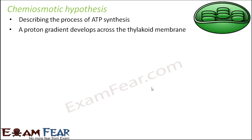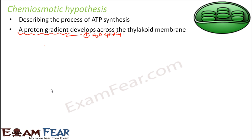A proton gradient develops across the thylakoid membrane. This gradient is developed by two factors. The first is the water splitting reaction. During water splitting, a lot of protons are produced and those protons get accumulated in the thylakoid space, increasing the concentration of protons inside the thylakoid space.